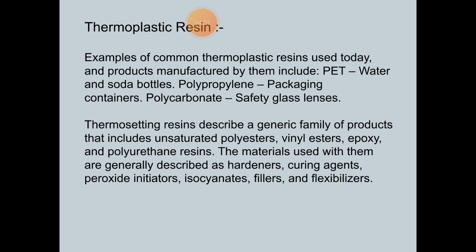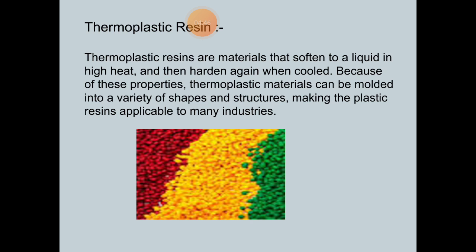Thermoplastic resins are materials that soften or become liquid at high heat and then harden again when cooled. The materials used with them are generally described as hardener, curing agent, peeler, and flexibilizer. Because of these properties, thermoplastic materials can be molded into various types, shapes, and structures, making plastic resins applicable to many industries. The figure here shows examples of thermoplastic resins.